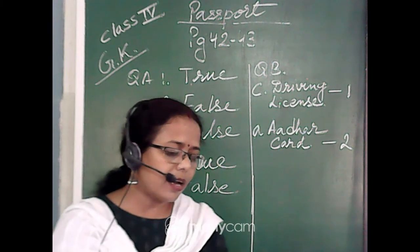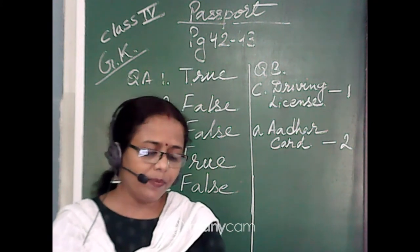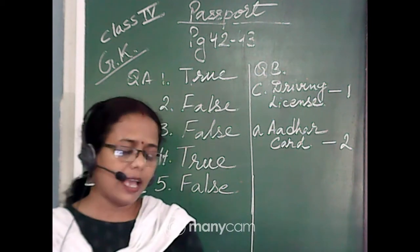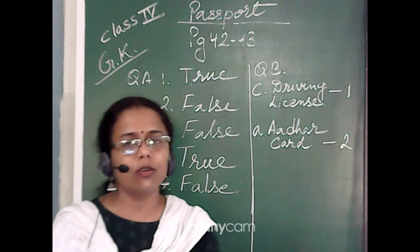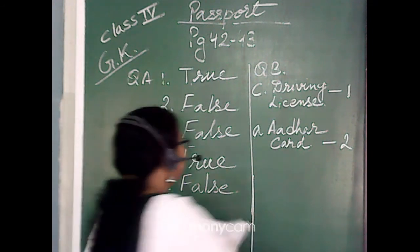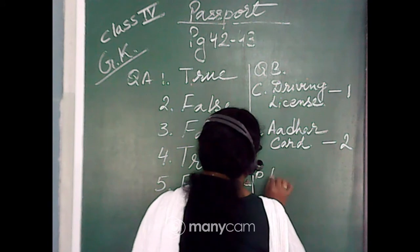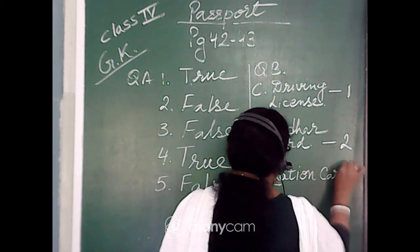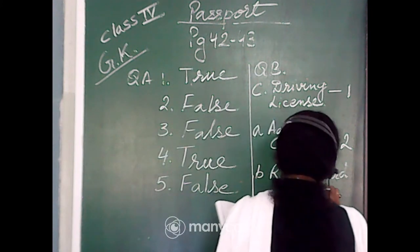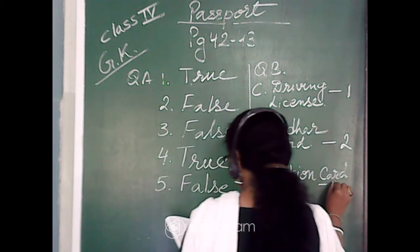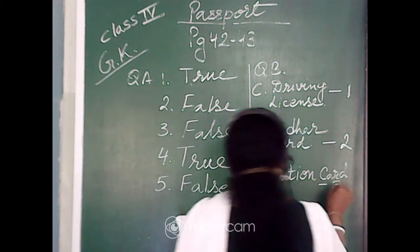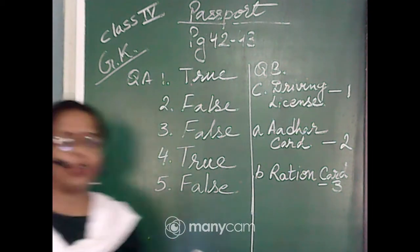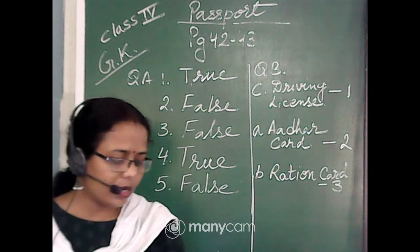Number three: 'This card is issued for a family that allows people to obtain food grains, oils, and other essential things at low cost.' All of us know this is the ration card — option B. So ration card is matched with number three.